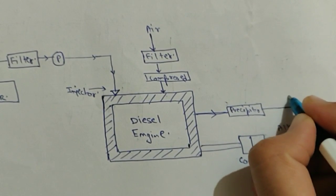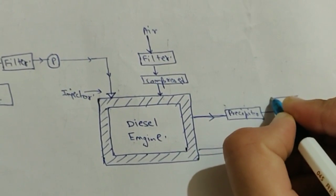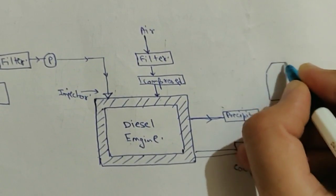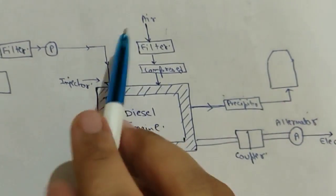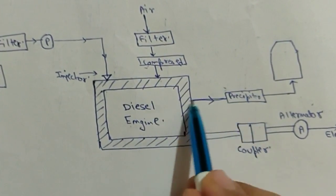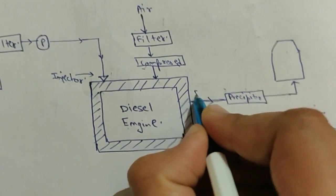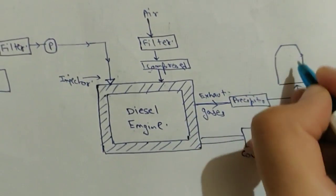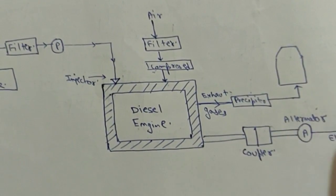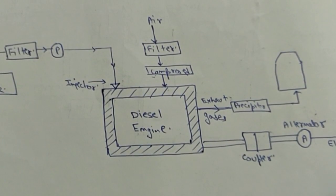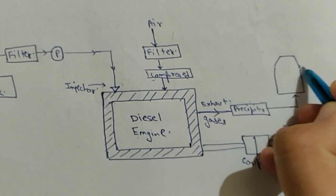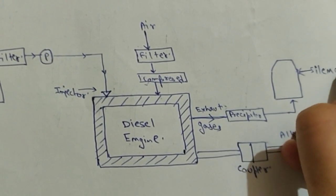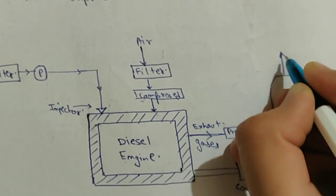The exhaust gases are passed through a precipitator and then through a silencer. A silencer is a component unique to diesel engines because diesel engines tend to make a lot of noise since the air inside is compressed. If we release the exhaust gases directly, a lot of noise is produced. To avoid that, exhaust gases pass through a silencer first and then are released into the atmosphere.